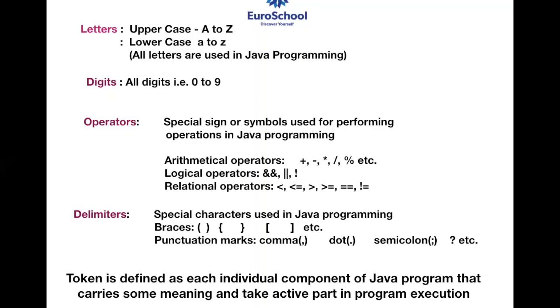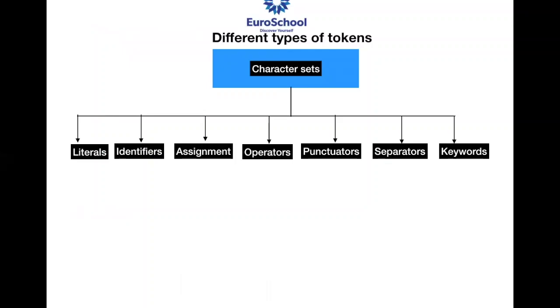A token is defined as each individual component of a Java program that carries some meaning. You cannot just randomly type anything and expect the computer to understand or the program to execute. When you specify according to the language using proper tokens, then the token takes an active part in program execution. There are different types of tokens: character sets, literals, identifiers, assignment, operators, punctuators, separators, and keywords.